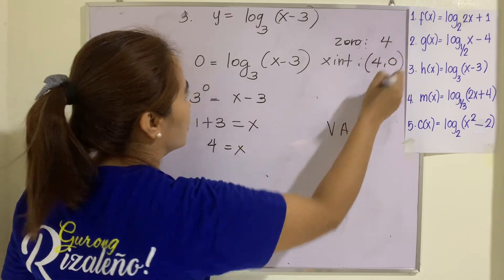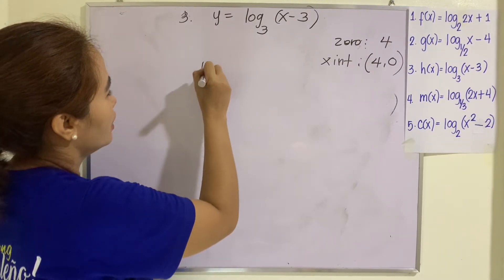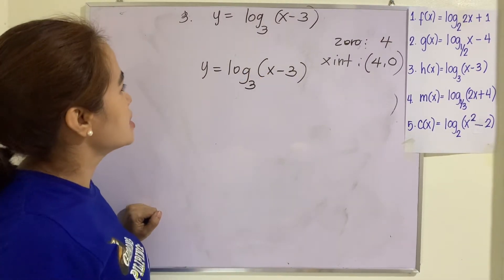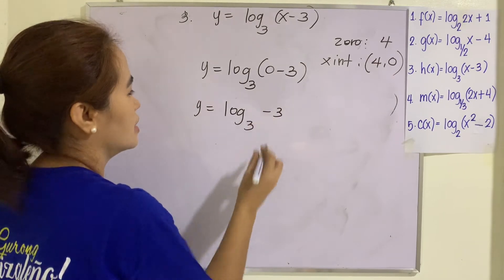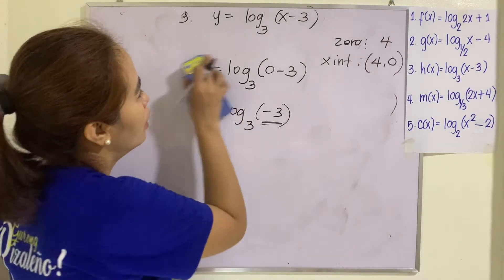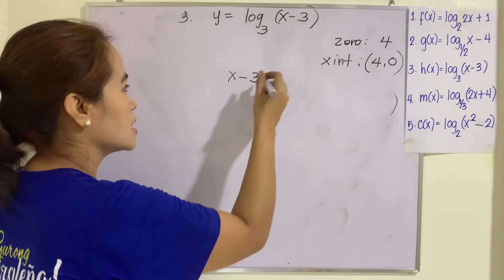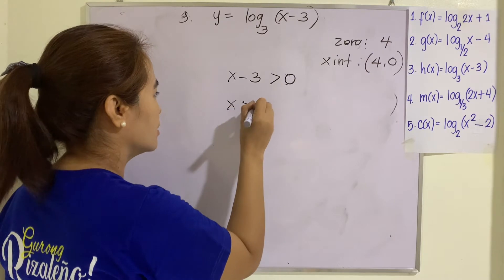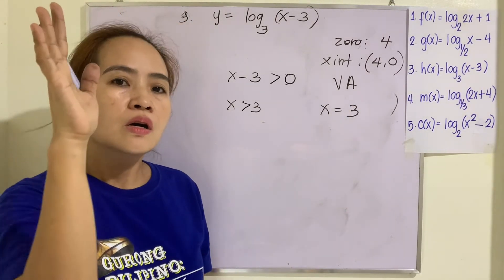The x-intercept is (4, 0). For the y-intercept, replace x by 0: y equals log of (0 minus 3) to the base 3, which is log of negative 3 — this is indeterminate, so we do not have a y-intercept. For the vertical asymptote: x minus 3 must be greater than 0, so x is greater than 3, and the vertical asymptote is x equals 3. The graph will not cross x equals 3.